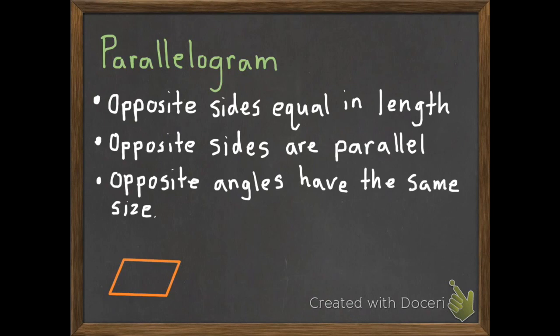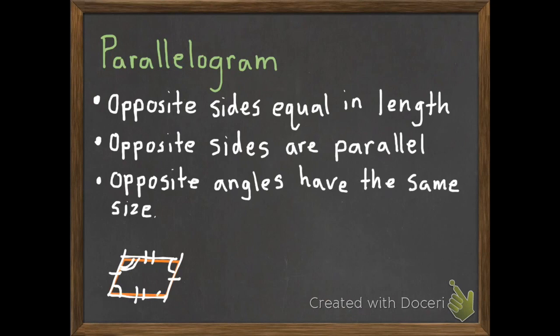Here is one parallelogram. The opposite sides are equal in length — this side and this side are equal in length, and this side and this side are equal in length. Then the opposite sides are parallel — this and this are parallel, and this and this are parallel. Then the opposite angles have the same size — this angle and this angle are the same, and this angle and this angle are the same size.